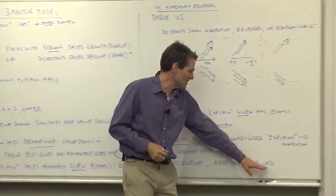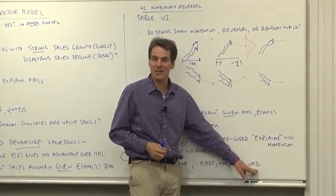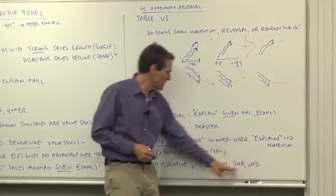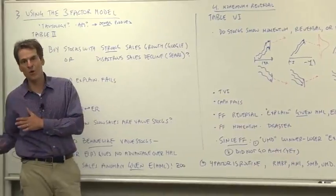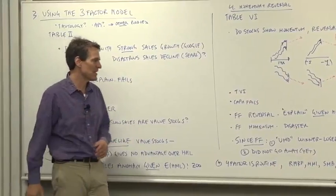That doesn't necessarily mean that we explain things. We don't really understand where momentum comes from. But if something is explained by that four-factor model, then at least you've reduced it to known puzzles rather than having it be a new puzzle.